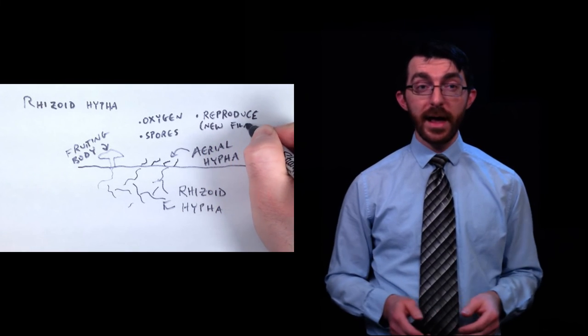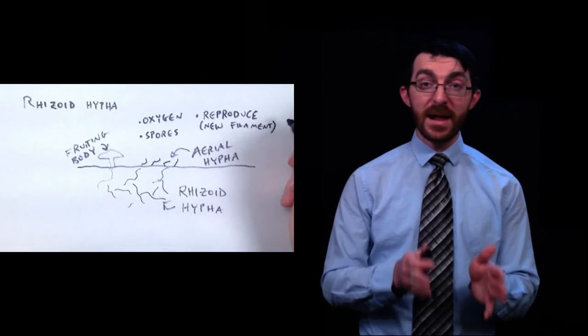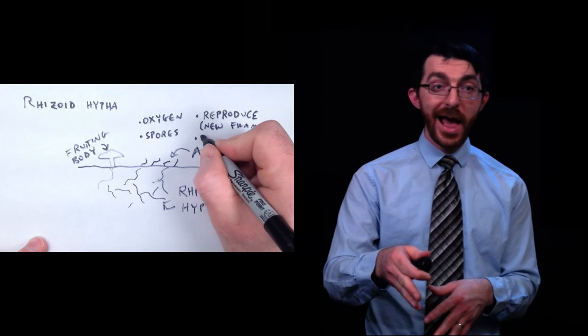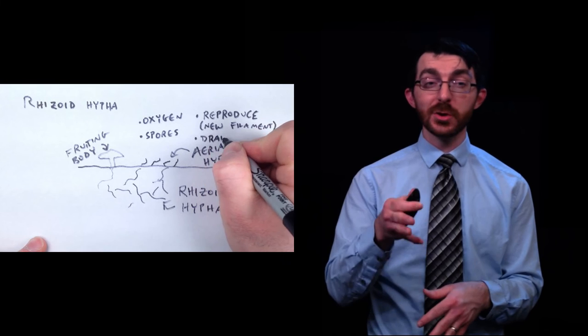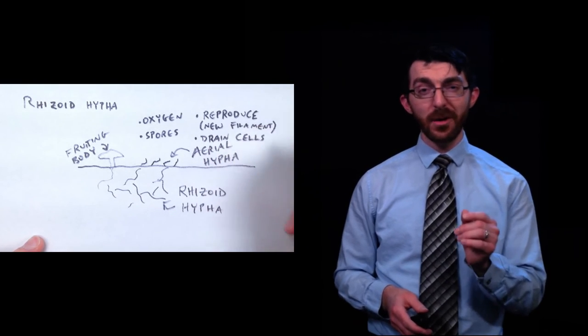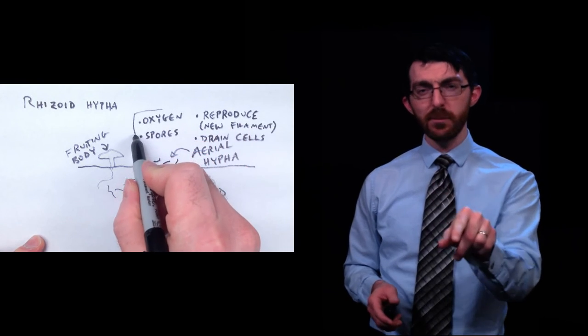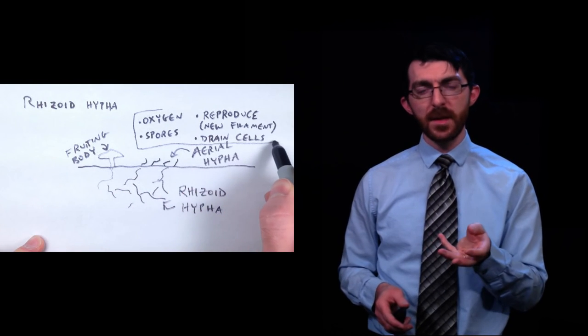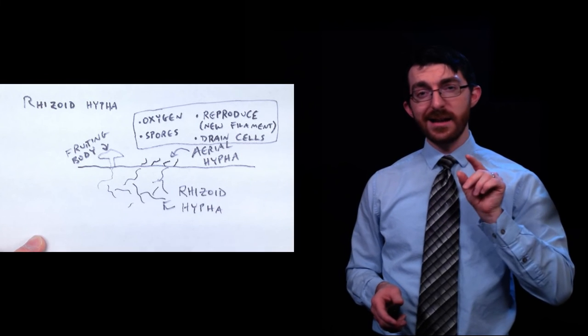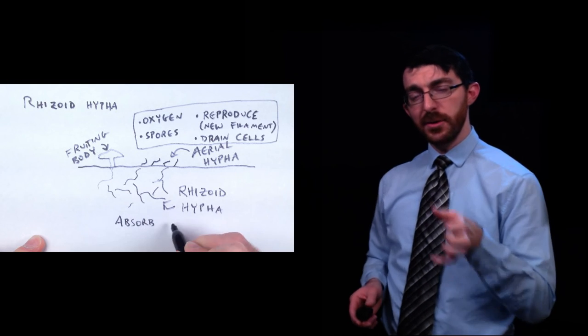And last of all, a hostorium. That is a hypha of a parasitic fungus. Remember, that's one that benefits from another organism at its expense, that enters the host's cells and absorbs nutrition directly from the cytoplasm. You can think of it almost like how a mosquito can stick its mouth, its kind of needle mouth, into your blood vessels and take blood out for its nourishment. This would be a kind of filament of cells, a hypha, that can enter into a host cell and just kind of suck the nutrition out of it.